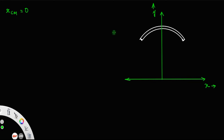Since it is symmetric about the y-axis, x_cm is equal to 0. We only need to find y_cm. For that, let us consider a small length dL here — a section of arc of length dL.